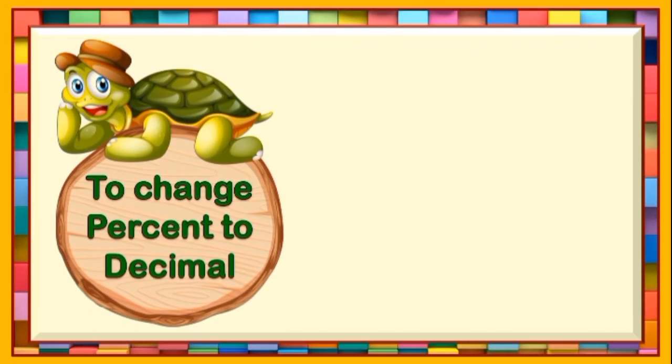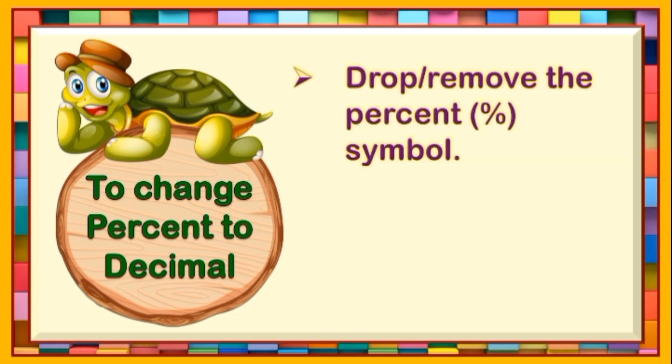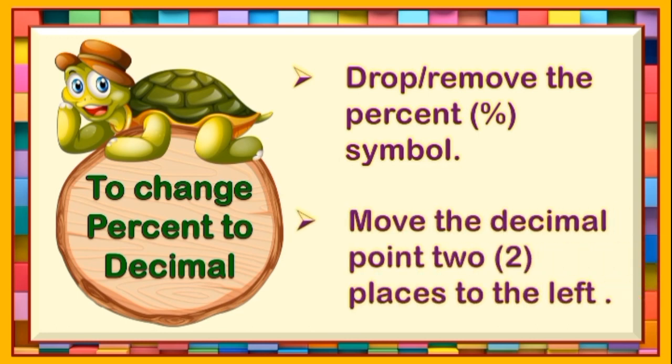To change percent to decimal, we need to follow these steps. The first one is to drop or remove the percent symbol. Second, move the decimal point two places to the left. Let us put this into examples.